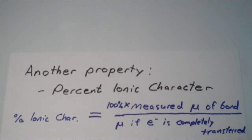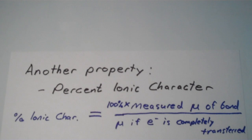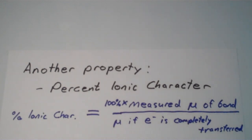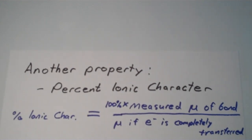What the percent ionic character is, is it's the measured dipole of the bond divided by the dipole moment if the electron is completely transferred, which is a hypothetical situation, and then times 100%. When I originally drew this, I forgot to put in the 100%, so I tried to just sneak it in right here.